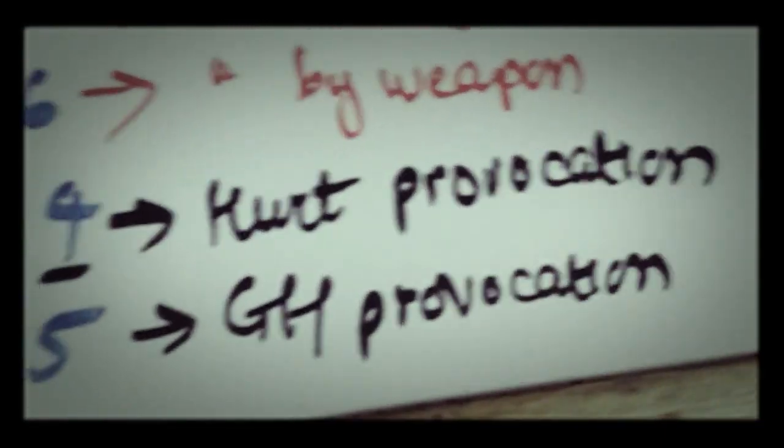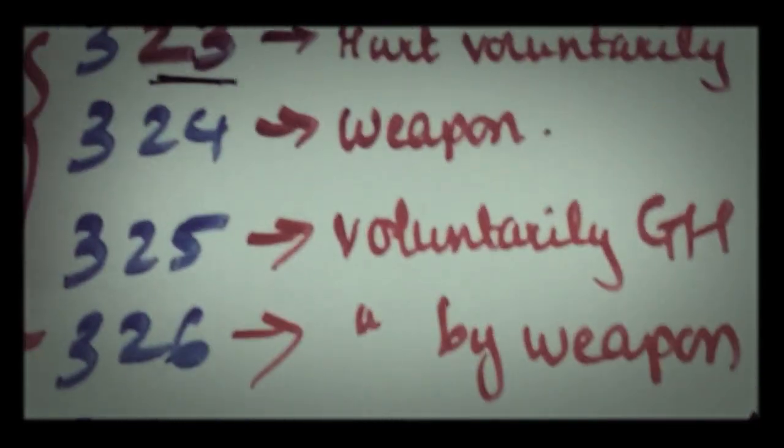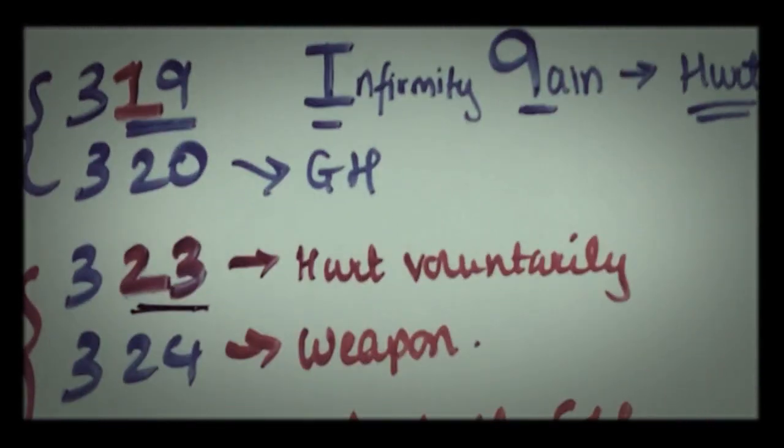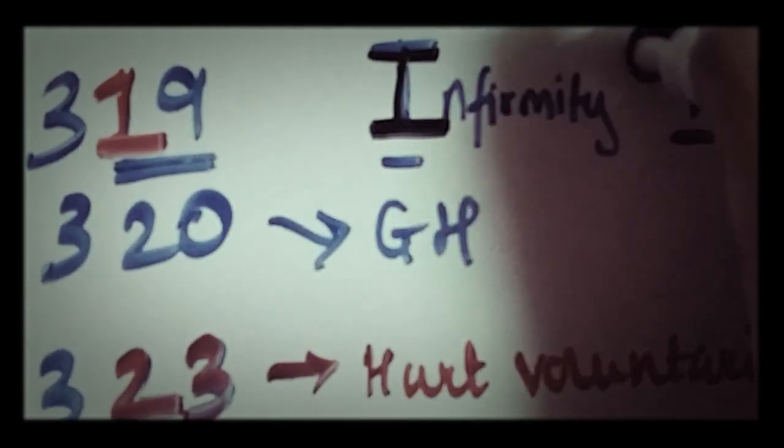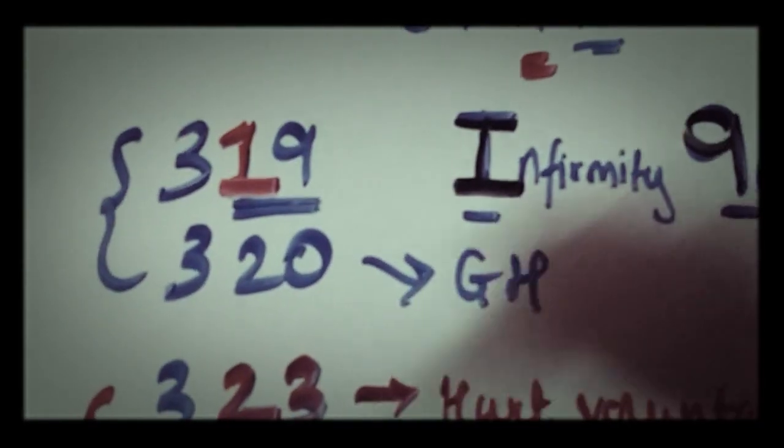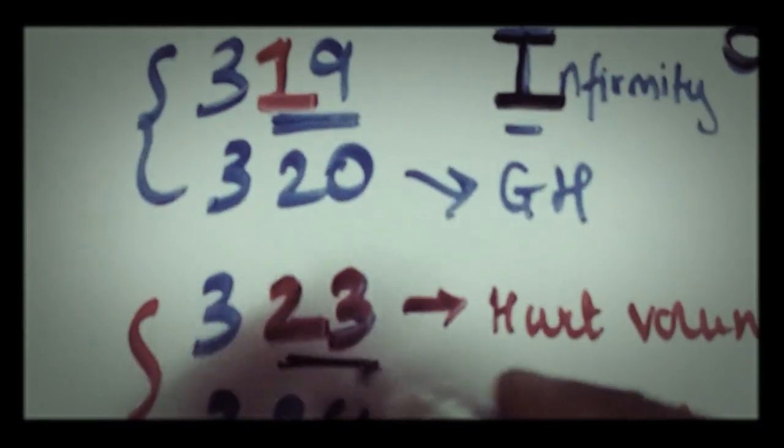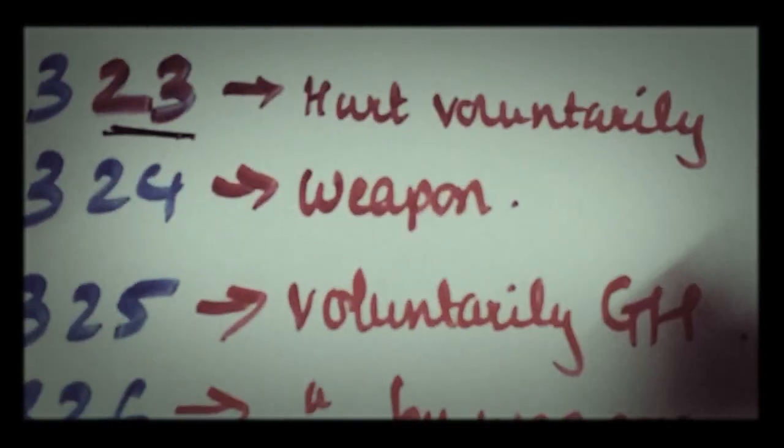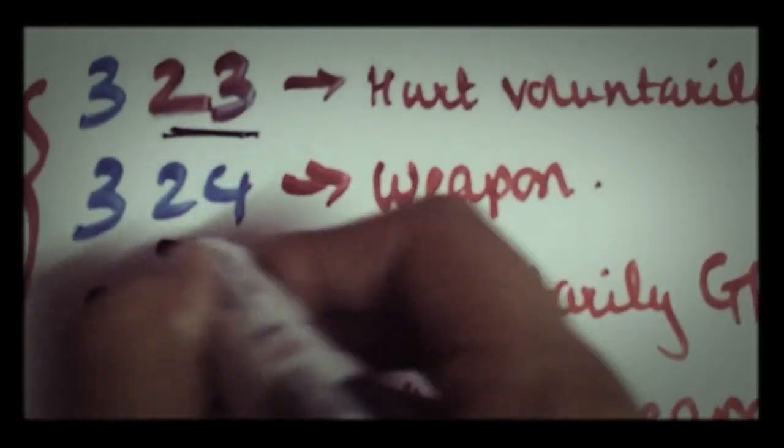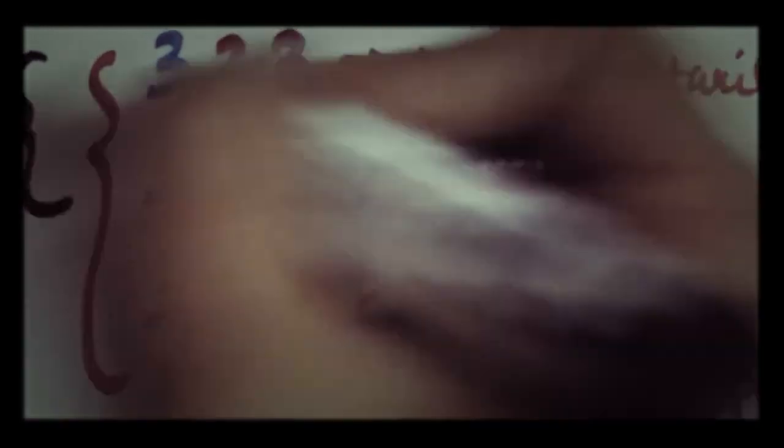So let's revise real quickly. We started off by saying that 19 looks like an I and P for infirmity and pain, which is the definition of hurt. Then we said that whatever follows hurt is grievous hurt, so 320 was grievous hurt. Then we couldn't remember 323 and the consecutive numbers after that, so we remember 319 has a one, and what follows one is two and three. So that is hurt voluntarily, and 324 with a weapon.